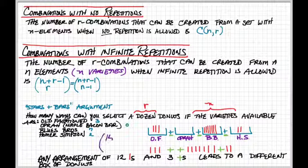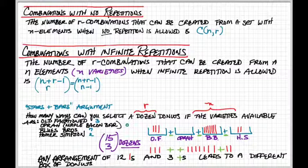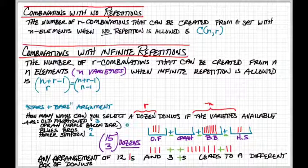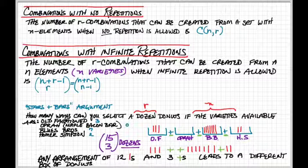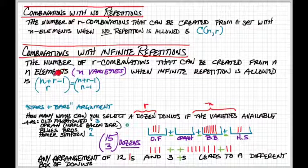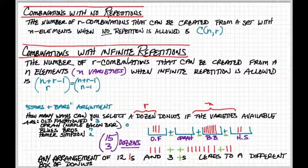That's going to be 15 choose 3 different dozens. In general, since R is the number of objects we are trying to select, and N is the number of varieties, we would have R ones and N minus one plus signs, which is where we end up with the solution here of R plus N minus 1, choose R, which is the same thing as N plus R minus 1, choose N minus 1.